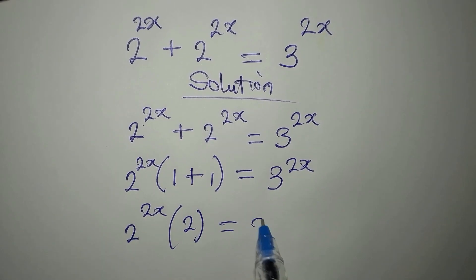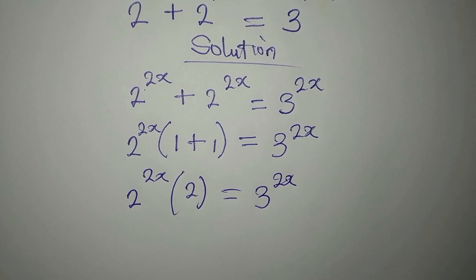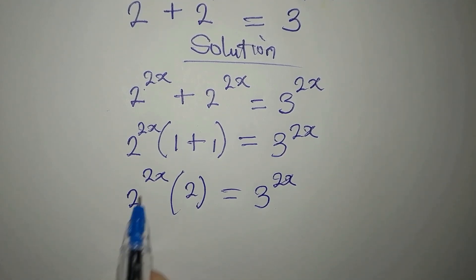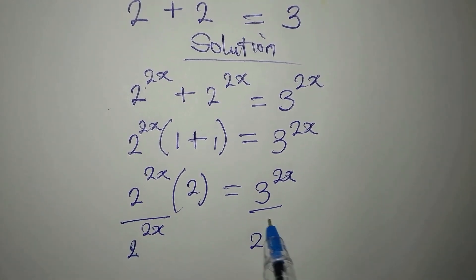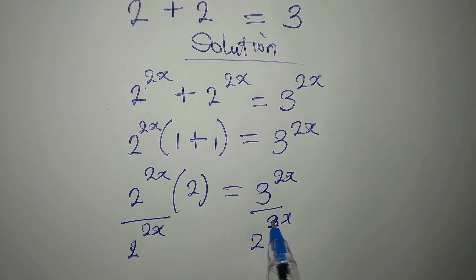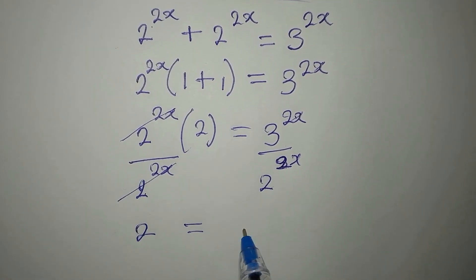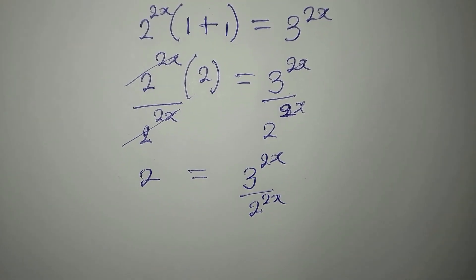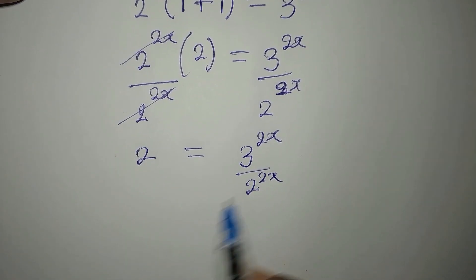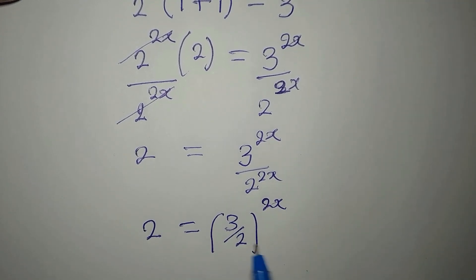Now we can divide both sides by 2 to the power of 2x. Dividing gives us 2 equals 3 to the power of 2x over 2 to the power of 2x. From here we apply one of the laws of indices: these two will be equal to 3 over 2 to the power of 2x, since they are both raised to the same power.